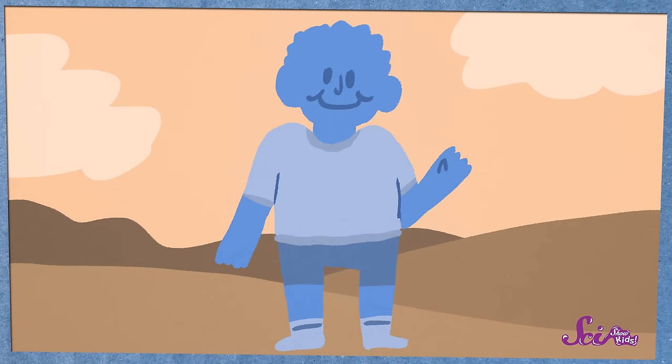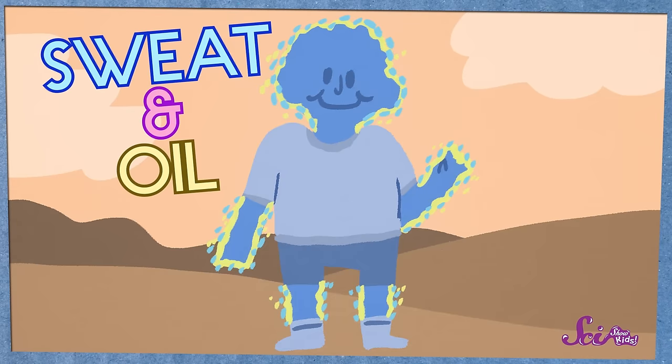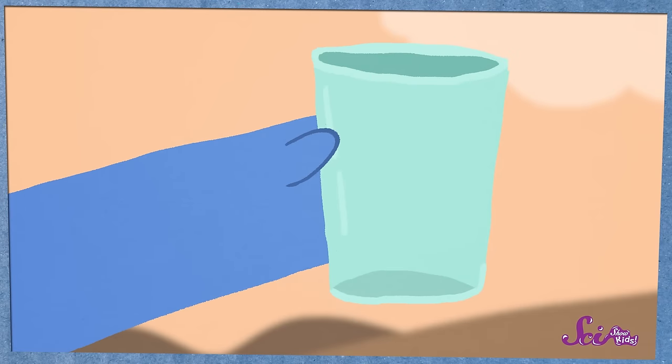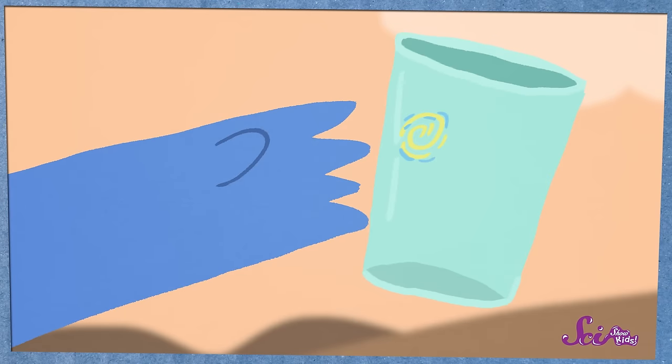That's because the skin that covers our bodies, including our fingers, makes sweat and oil. That sweat and oil mixes together and covers the tips of our fingers. When we touch something, or pick it up, the sweat and oil get left behind, and make a mark that looks a lot like the pattern on our fingertips.